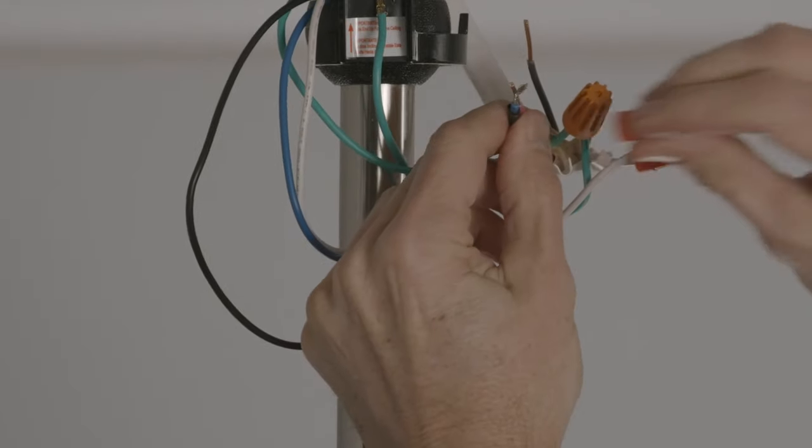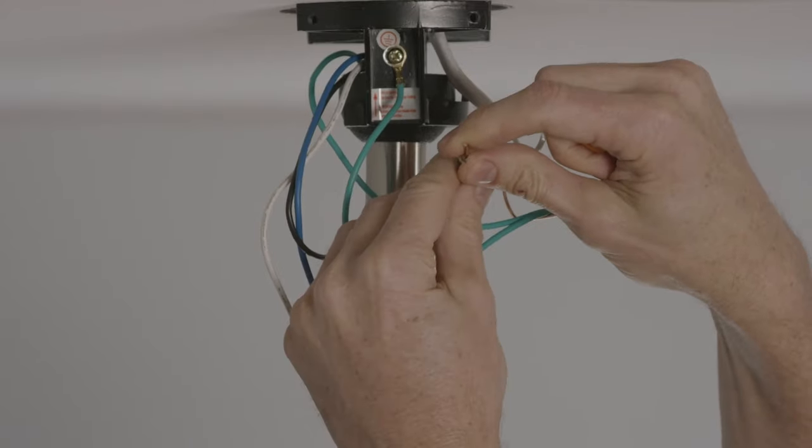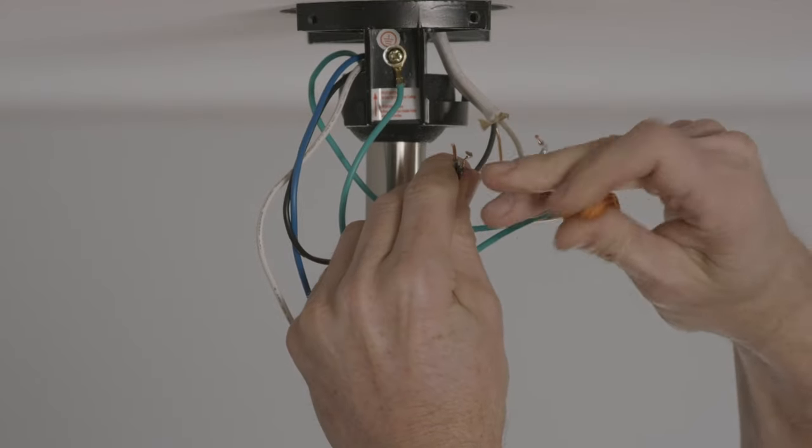First, connect the ground wires together, then the white. Now connect the light kit's blue wire to the red wire in the ceiling, and the black wire from the fan to the black wire in the ceiling.